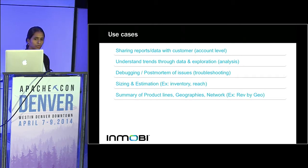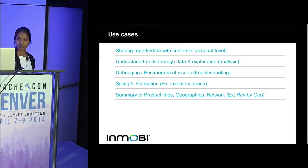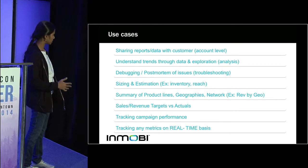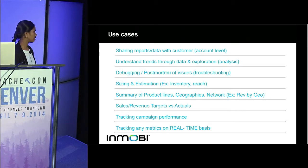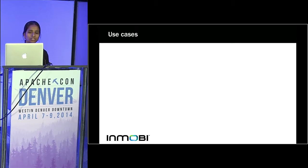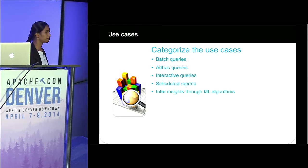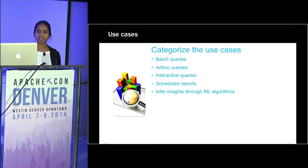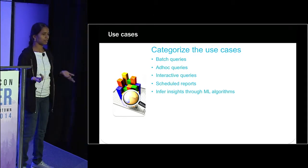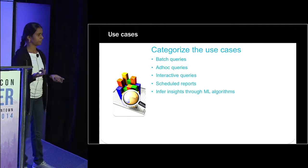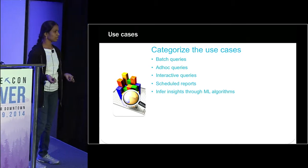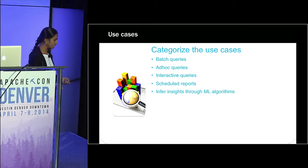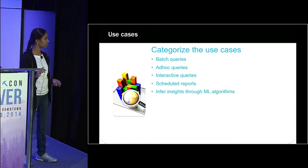There are summaries of products at geographic and network level, sales and revenue comparisons versus targets versus actuals, and tracking campaign performance with real-time metrics. If we categorize all these use cases, there are batch queries that perform over a big period of data — say a month or six months — ad hoc queries which you don't know ahead of time, interactive queries where you drill down into results, and scheduled queries where you run something every first of the month or every Monday.